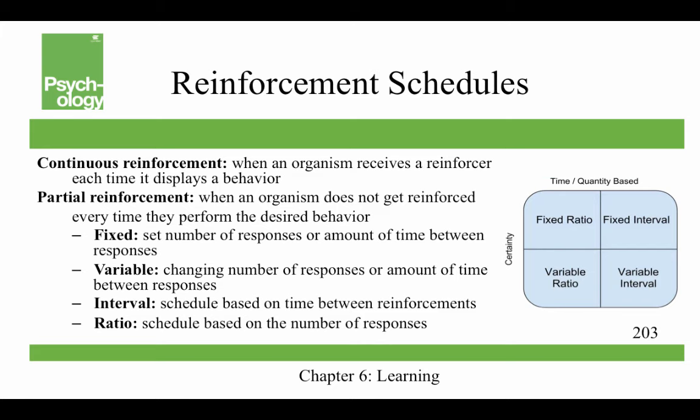In continuous reinforcement, you receive a reinforcer each time you display a particular behavior. In partial reinforcement, you don't get reinforced every time. When it's fixed reinforcement, there's a set number of responses or amount of time between responses. If it's variable, then you change the number of responses or the amount of time between responses. Interval means it's the time between reinforcements, and ratio means it's based on the number of responses.